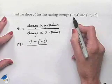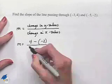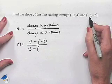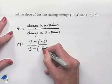In the denominator, we come back to the first point and pick up its x value, negative 3, and subtract from that the x value in the second point, which is negative 5.